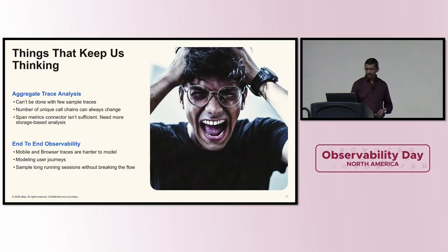So there are more problems to solve. One of the things that we are still deeply in thought about is how can we do aggregate trace analysis. End of the day, you cannot handpick a few traces and make a decision out of it. Sometimes you need to look at everything together. One of the reasons being that the number of call chains for a given application are not necessarily finite, especially with things like feature flags. The call chains can be very arbitrary depending on what the feature flag actually tries to do. Span matrix connector and the service graph connector, they are not sufficient. So we are looking at how can we do some storage-based analysis given that we store the entire trace in a single shard. And the other thing is, as I mentioned during the panel, end-to-end observability is very important to us, starting from mobile all the way to the last database call that was done. How can we understand what's going on? How can we understand user journeys across various pages on the site? And how can we look at long-running sessions?